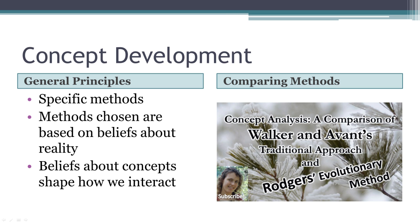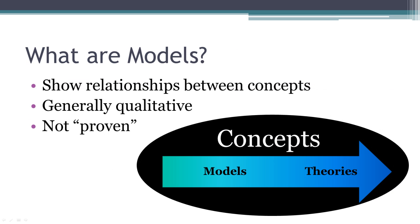Often research will examine the relationships between and among various concepts. A framework that shows these relationships may be in the form of a model or a theory. Models are usually developed based on qualitative research. They demonstrate the researchers' interpretation of how concepts are related to one another. You may find models in the findings section of some research articles.